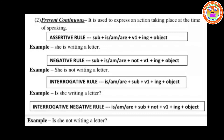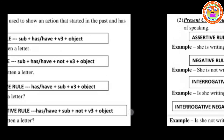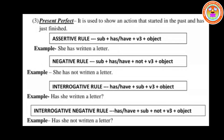Having this format always in hand makes it simple to understand whatever tense is given. Next we go to present perfect, which is a little bit different. It is used to show an action that has started in the past and has just finished. The assertive affirmative form is: Subject + has/have + V3 + object. 'Has/have' is the auxiliary verb conjugated according to the subject.